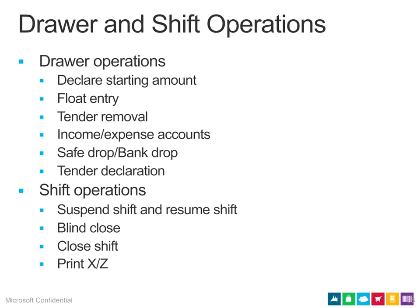Income and expense accounts are ways to track money going in or out of the drawer. You can set up different reasons and map them to different GL accounts. A typical example for expense accounts is petty cash — say you need to buy cleaning supplies. You can take money out of the drawer with an expense account called 'petty cash' or 'cleaning supplies' that maps to a specific GL account.